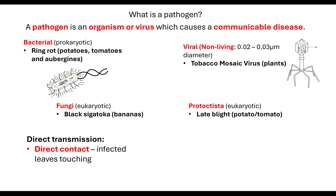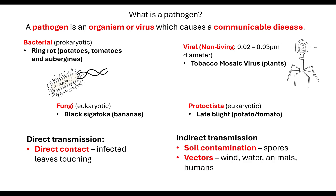You need to know about transmission — whether that is through infected leaves touching uninfected leaves and transmitting the communicable disease, or whether there are spores in the soil contaminating it. With some infections, it can take two to three years before you can grow a crop in the same soil due to contamination. Vectors such as wind, water, animals, or even humans brushing against plants can disperse these pathogens and infect a crop.